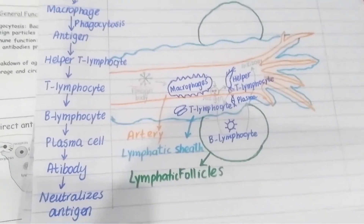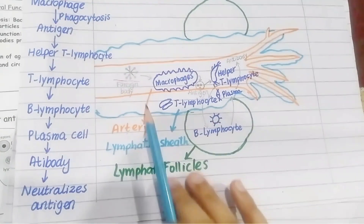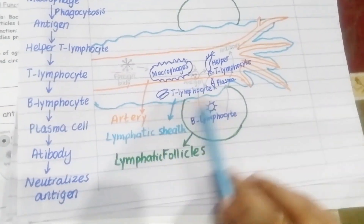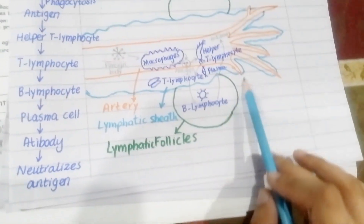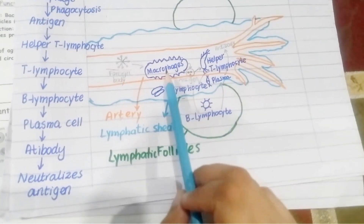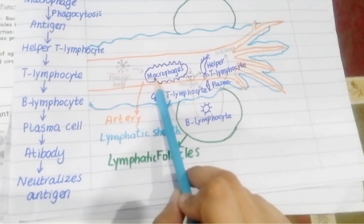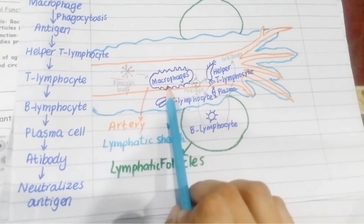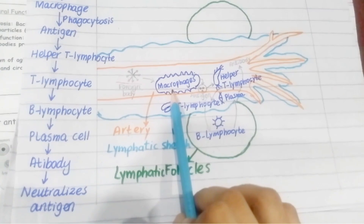At the cellular level, the main organization is as follows: a central artery is present, surrounded by a lymphatic sheath, and within the lymphatic sheath some lymphatic follicles are present. Macrophages may be present in the lymphatic sheath or in the bloodstream. When any foreign particle enters the bloodstream, the macrophage attacks it and ingests it by phagocytosis.